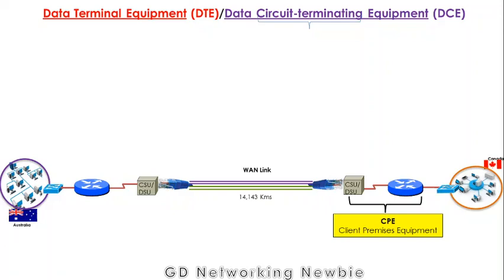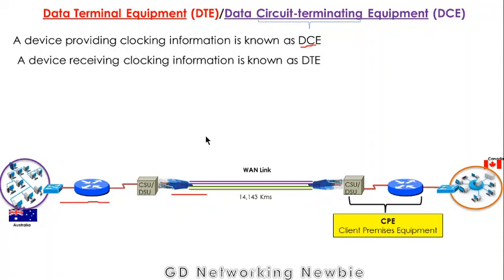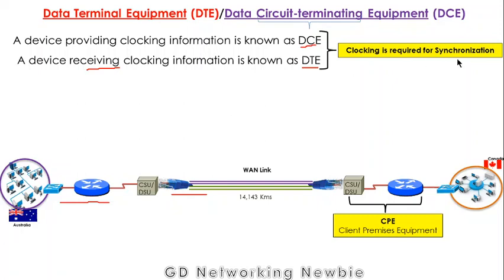Now we have Data Terminal Equipment (DTE) and Data Circuit-Terminating Equipment (DCE), also known as Data Communication Equipment. As discussed, this link may operate at different speeds, so we need a translator. We also need clocking information passed from one side to the other. The device that provides clocking information is known as DCE, and the device that receives clocking information is known as DTE. We need clocking information for synchronization.